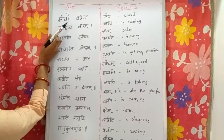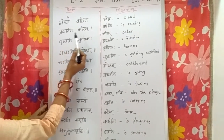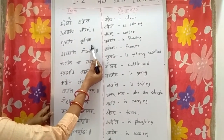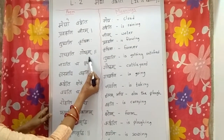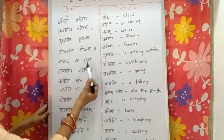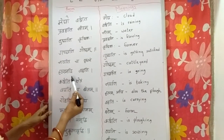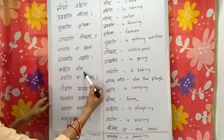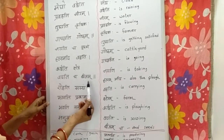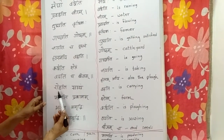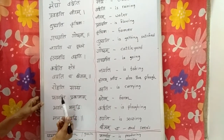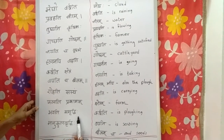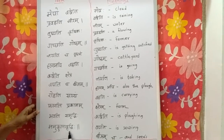Megho Varshti, Pravahati Niram, Tushyati Krushikaha, Gachchati Ghostham, Nayati Chavrushabham, Halam Api Vahati, Karshati Kshetram, Vapati Chavijam, Rohati Shashyam, Phalati Prakamam, Bhavati Samruddhi, Manukul Vruddhi.